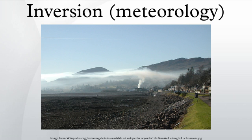Under normal atmospheric conditions, within the lower atmosphere the air near the surface of the Earth is warmer than the air above it, largely because the atmosphere is heated from below as solar radiation warms the Earth's surface, which in turn then warms the layer of the atmosphere directly above it, e.g., by thermals.